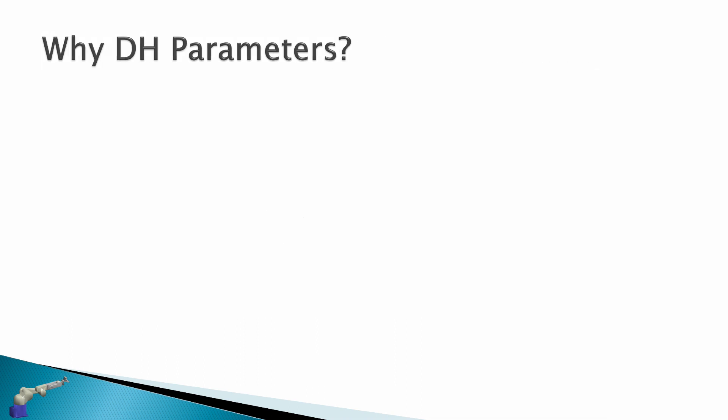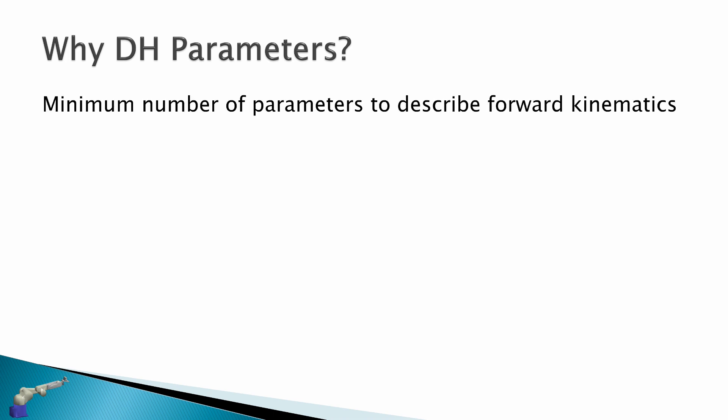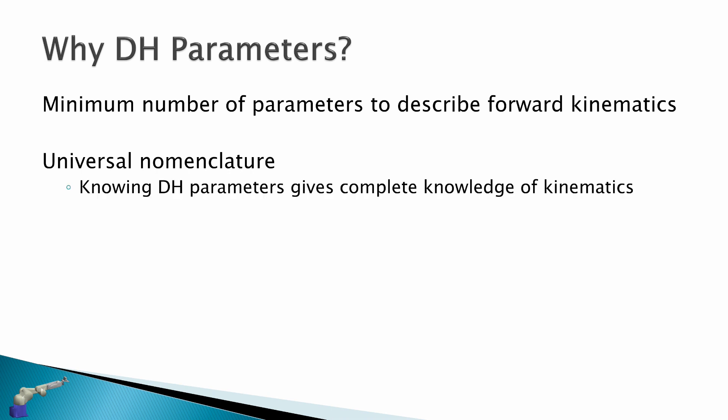Why do we use the DH parameters? Firstly, it's the minimum number of parameters needed to describe forward kinematics. We could define any kind of transformation matrix between frames, but DH parameters are the most efficient. It also allows us to use universal nomenclature, so knowing the DH parameters gives complete knowledge of the kinematics of a robot, and it's easily understood by anyone.